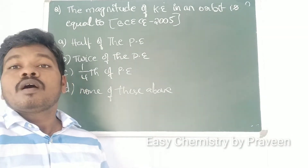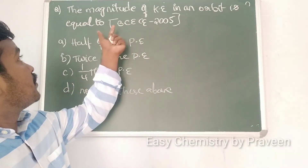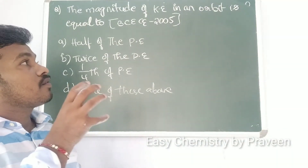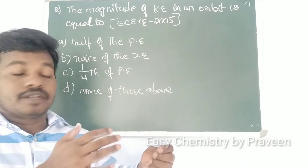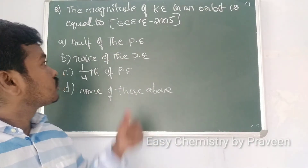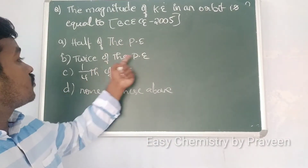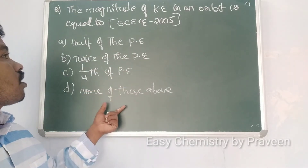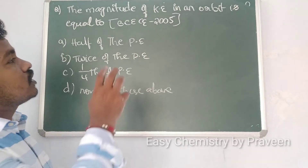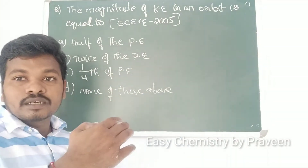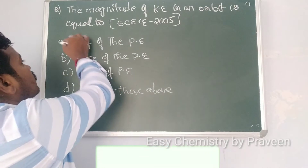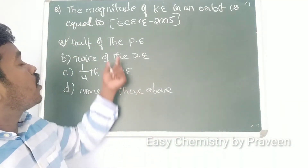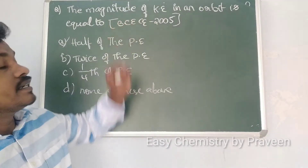The next question: the magnitude of kinetic energy in an orbit is equal to — options: half of the potential energy, twice the potential energy, one-fourth of the potential energy, or none of these. The magnitude of the kinetic energy in an orbit is always half of the potential energy.